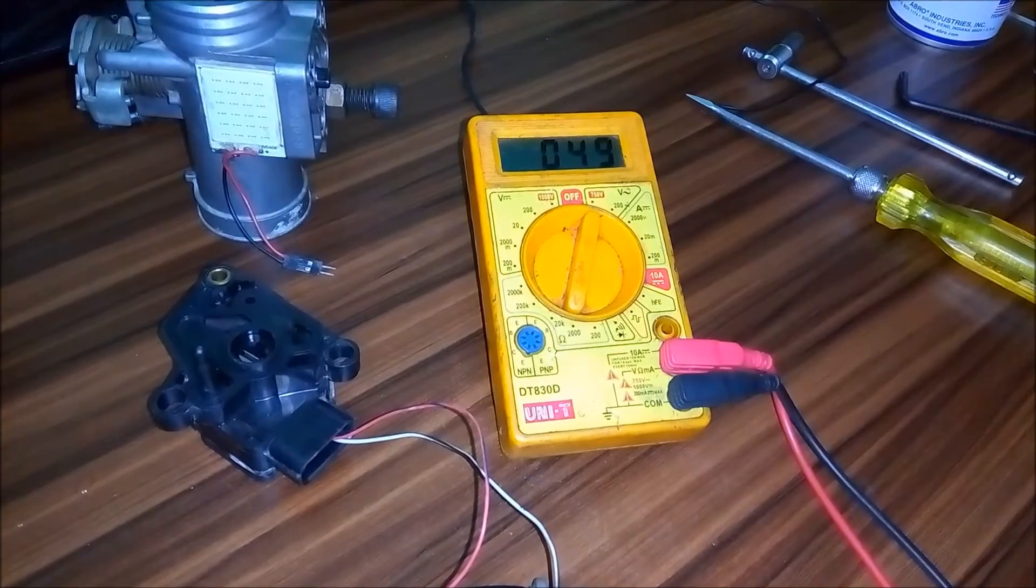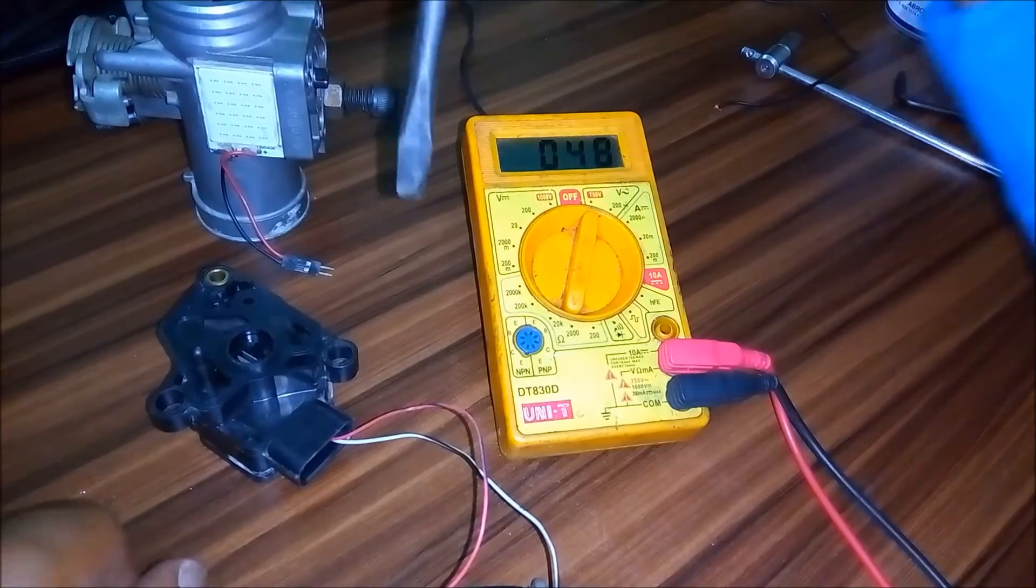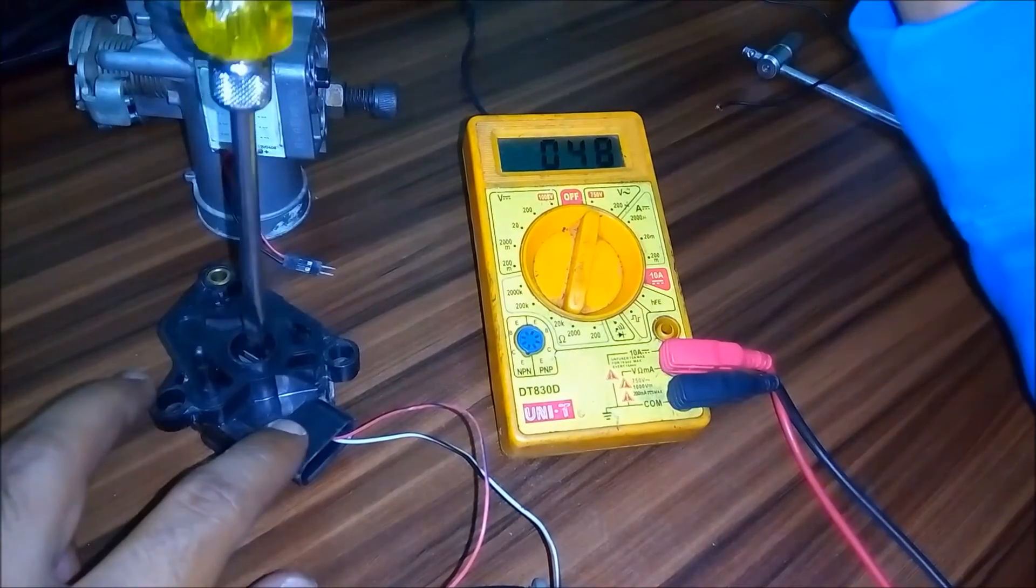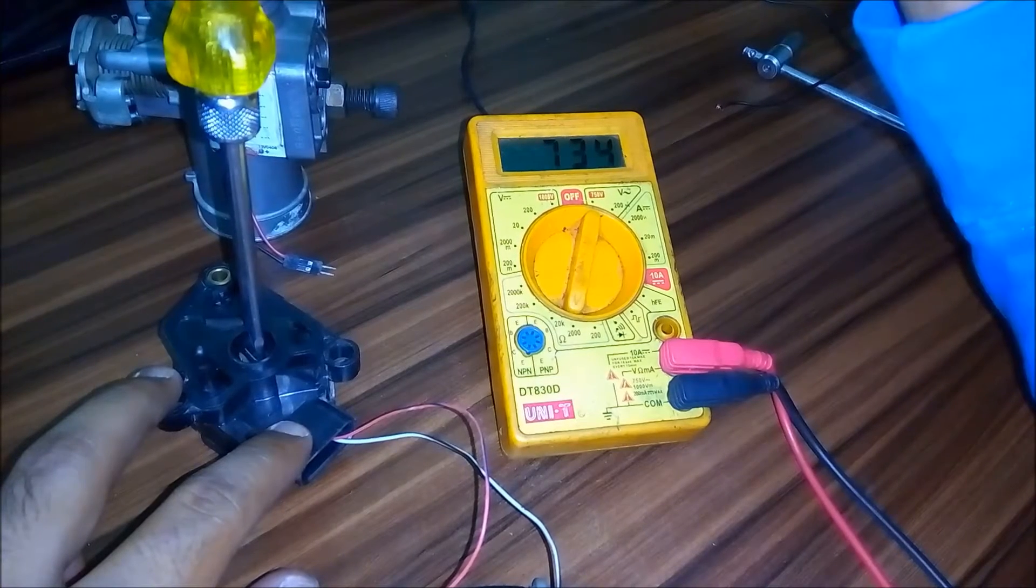Okay, so you are supposed to see some value. This 49 ohms is the neutral value of the throttle plate angle sensor. If you rotate it with a screwdriver or something, the value is supposed to go up or down depending upon the sensor.